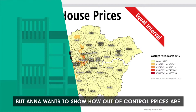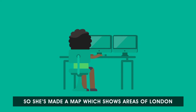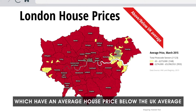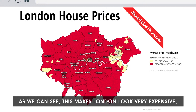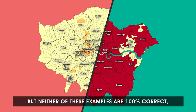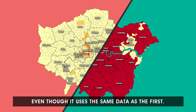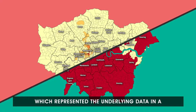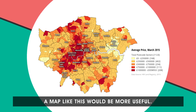But Anna wants to show how out of control prices are in London compared to the rest of the country. So she's made a map which shows areas in London which have an average house price below the UK average and areas which are above the national average. As we can see, this makes London look very expensive, and this more closely fits the national narrative on the topic. Neither of these examples are 100% correct, though the second is perhaps much more powerful even though it uses the same data as the first. If we wanted to produce something more meaningful which represented the underlying data in a more conventional way, a map like this would be more useful.